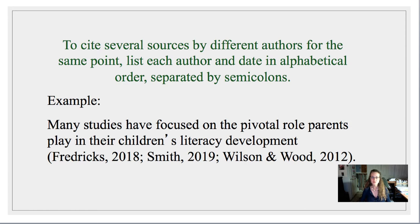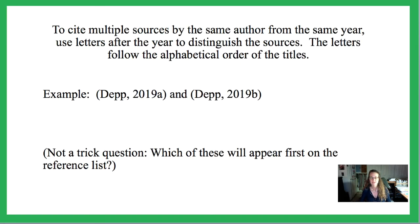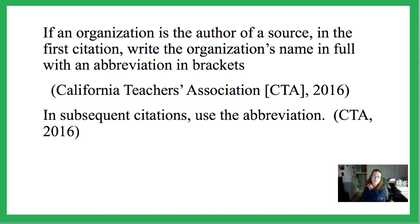If you have multiple authors, put the author names as shown. If one source has more than three authors, you would write 'Smith et al., 2019.' If one author has two works from the same year, distinguish them with an A or a B, and in your reference section 2019A would come first, then 2019B. If you're citing from an organization, the first time you list it spell it out fully, then in brackets write the abbreviation if it's commonly abbreviated.